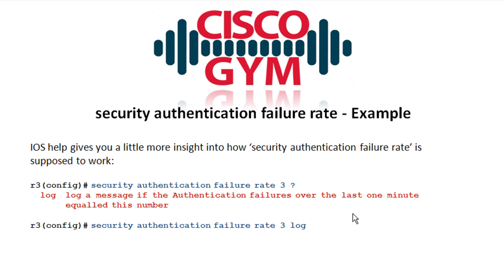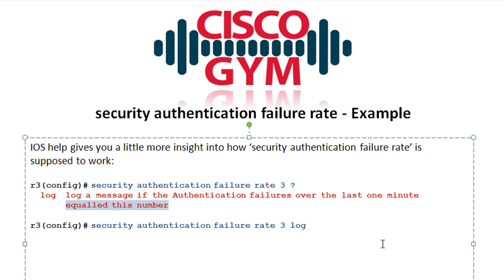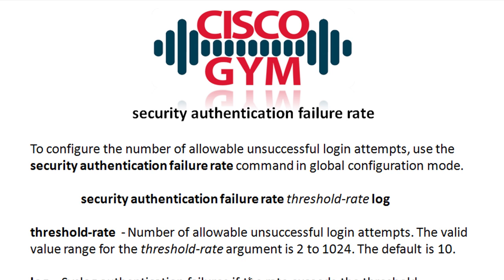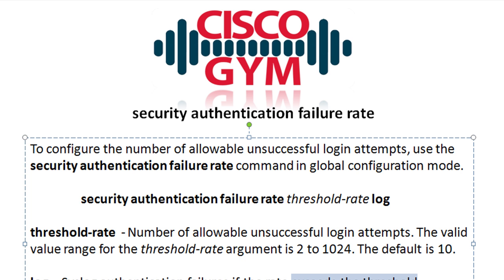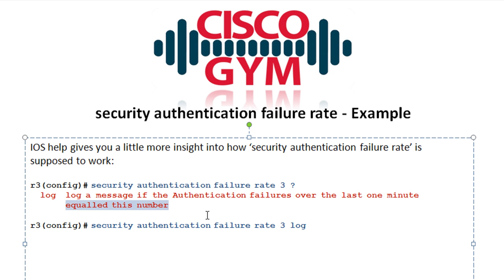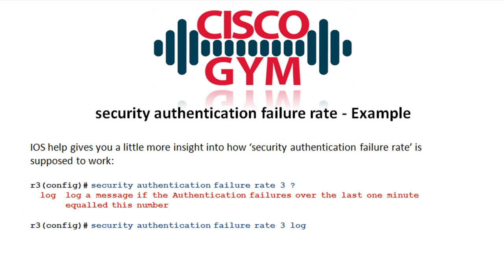Now remember my whole rant about when the syslog message is created. Going back one slide, it says 'syslog authentication failures if the rate exceeds the threshold' — which means X plus 1 to me. But the IOS help says 'equals this number,' which is X. So you've got Cisco IOS help directly contradicting the Cisco documentation on the website. If you get this on the exam you're kind of stuck, especially since we've never got this to work. One source says 'when it exceeds' (X plus 1), the other says 'when it equals' (X).